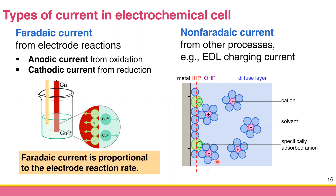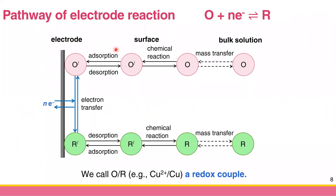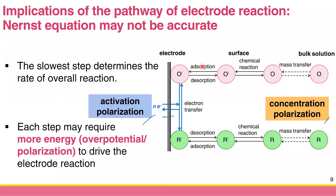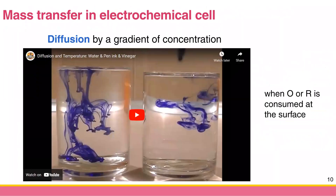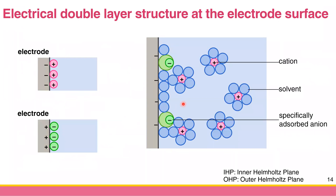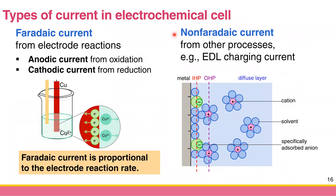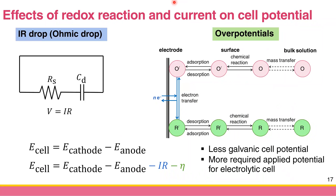Before the break, let's summarize: we talked about the pathway of electrode reaction, where you undergo many processes including concentration polarization, activation polarization, and the electrical double layer, which gives the charging current. Basically, in dynamic electrochemistry you have a significant amount of current.